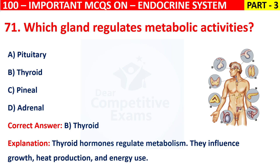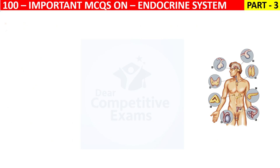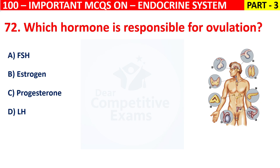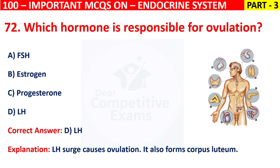Question 72: Which hormone is responsible for ovulation? Your options are FSH, Estrogen, Progesterone, or LH. The correct answer is D, that is LH. The LH hormone surge causes ovulation. It also forms the Corpus Luteum.